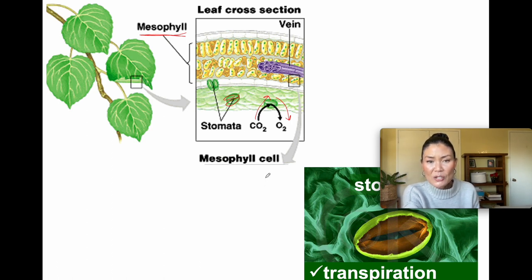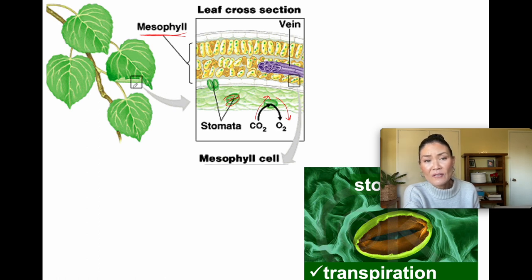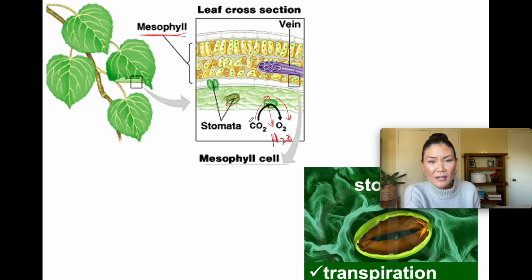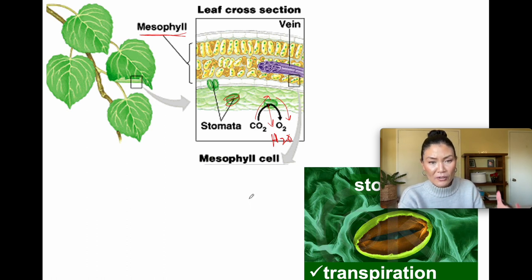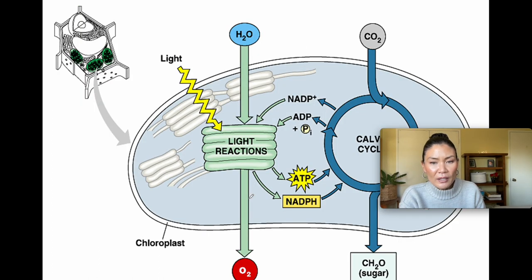Here is a microscopic photo of guard cells that make up the stomata. Transpiration also takes place here — water drawn up at the roots diffuses or evaporates out of the leaf through the stomata. On a really warm, windy, or dry day a lot of water evaporates out quickly. When plants lose water at the stomata, that's called transpiration.